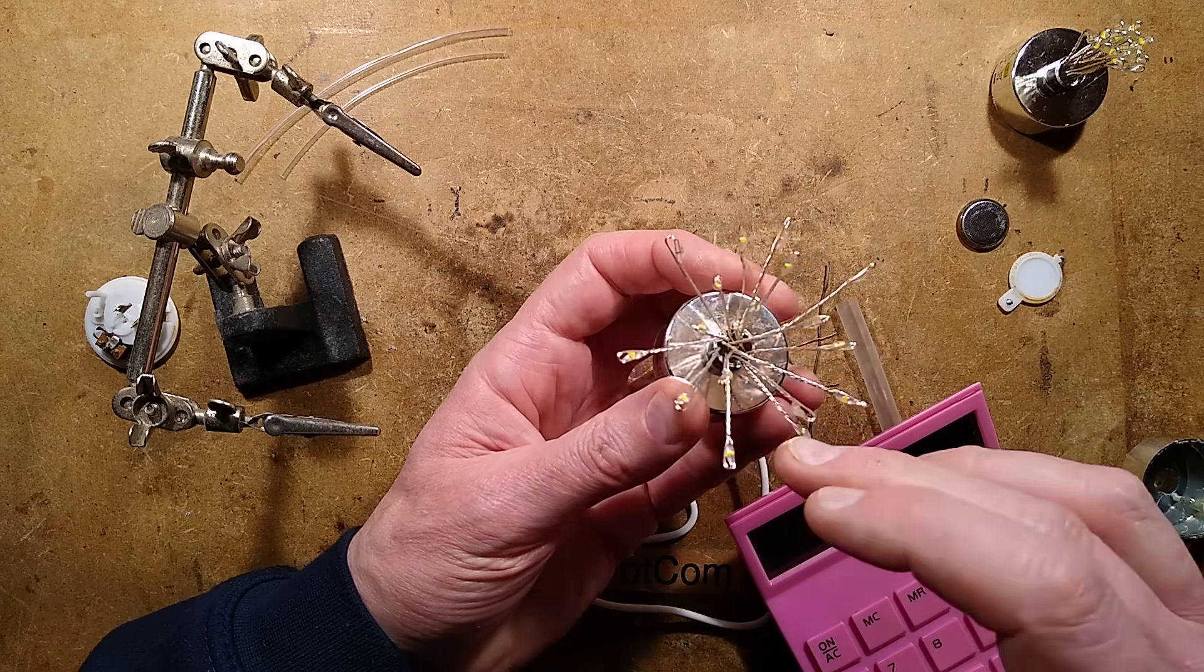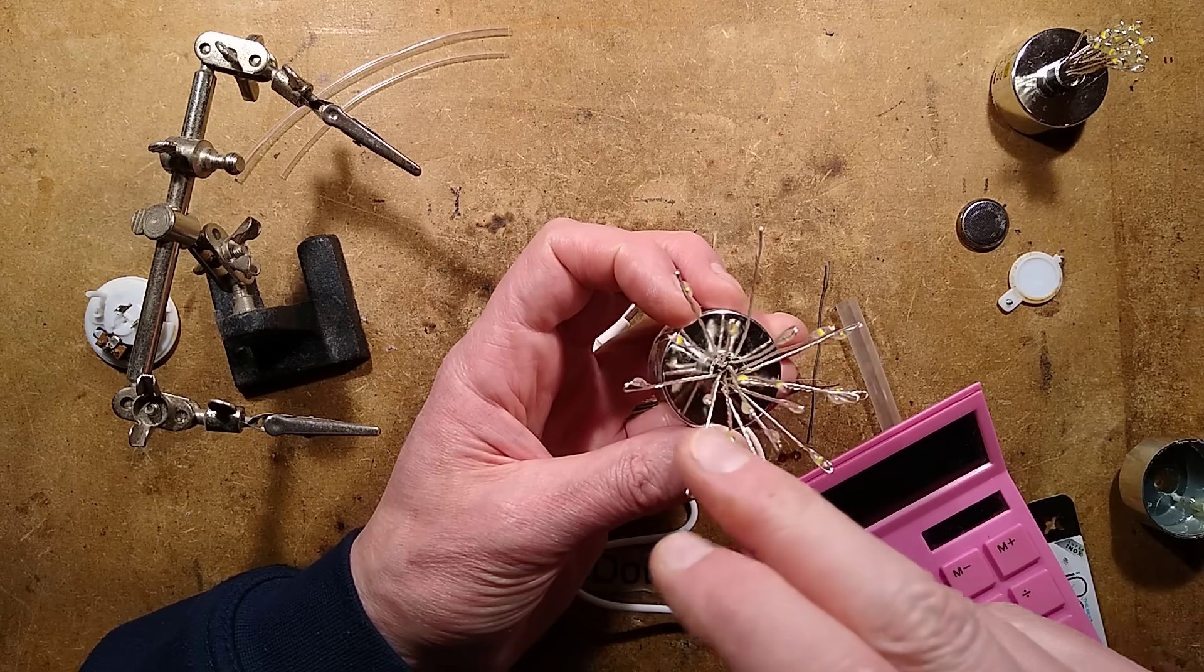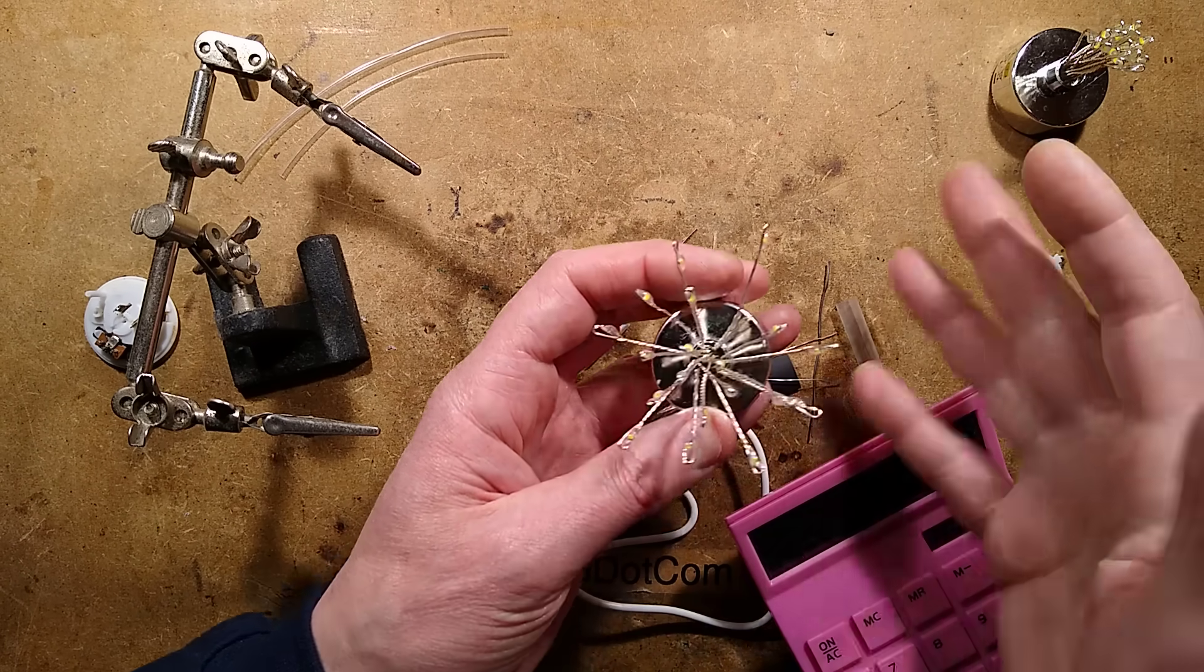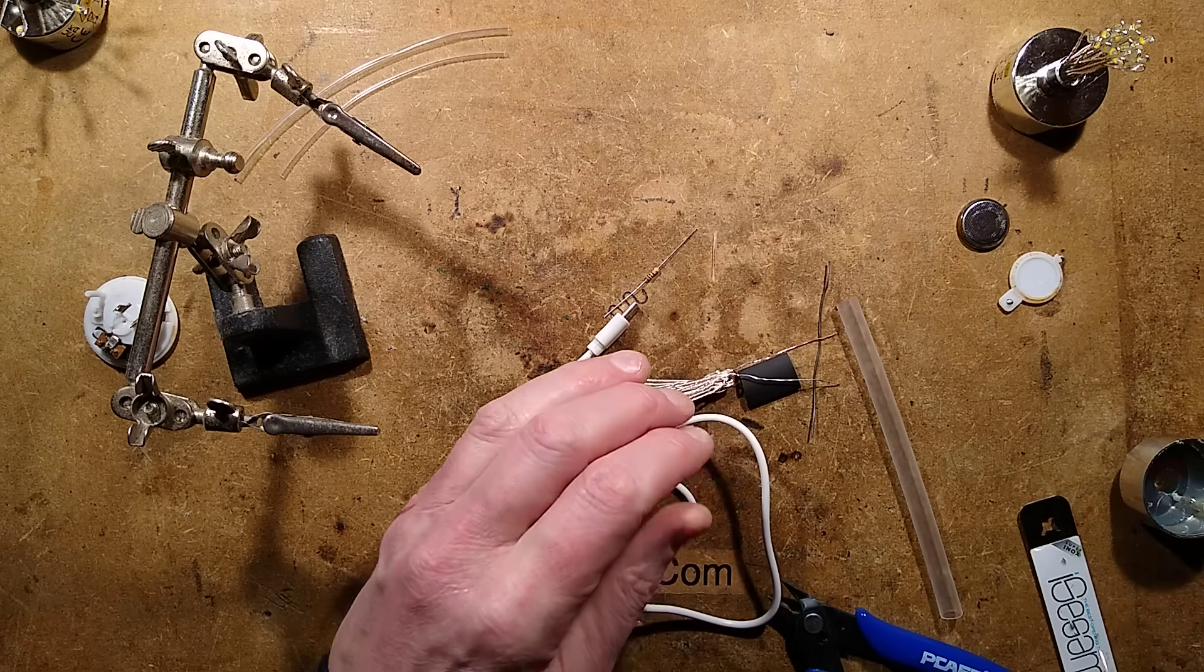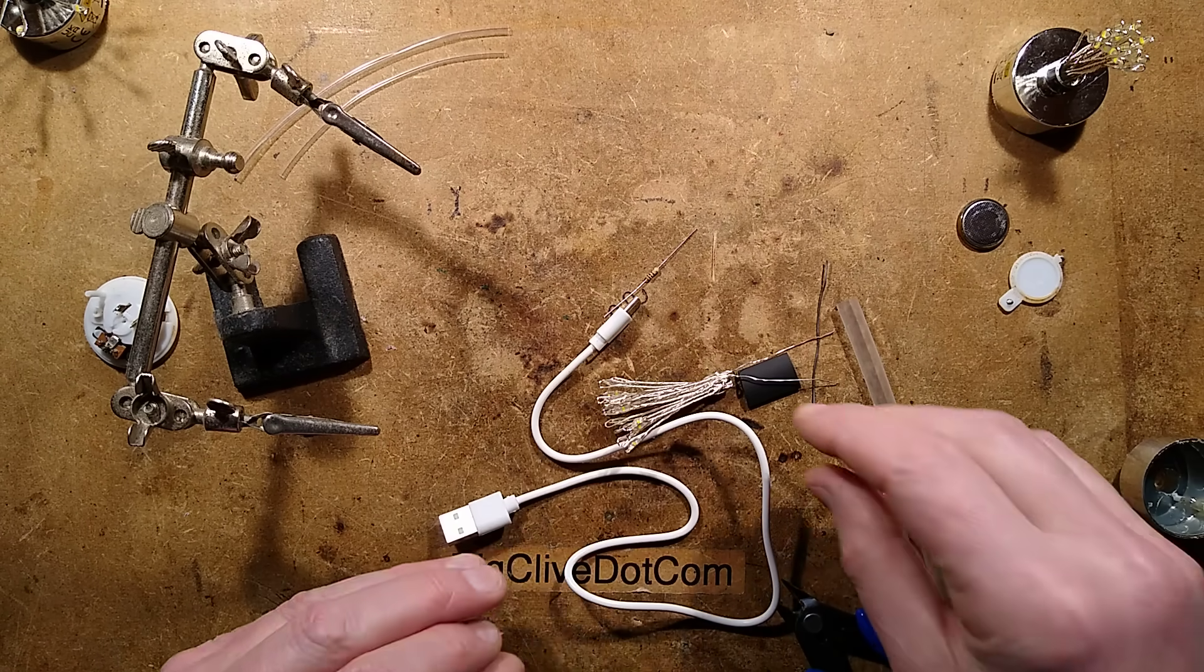Divided by all these LEDs, not sure how many there are, let's count them. 1, 2, 3, 4, 5, 6, 7, 8, 9, 10, 11, 12, 13, 14, 15, 16, 17, 18, 19, say 20. Okay, so that is going to be roughly just over a milliamp each. It's not going to be too bright but that's fine, the lower the current the better.